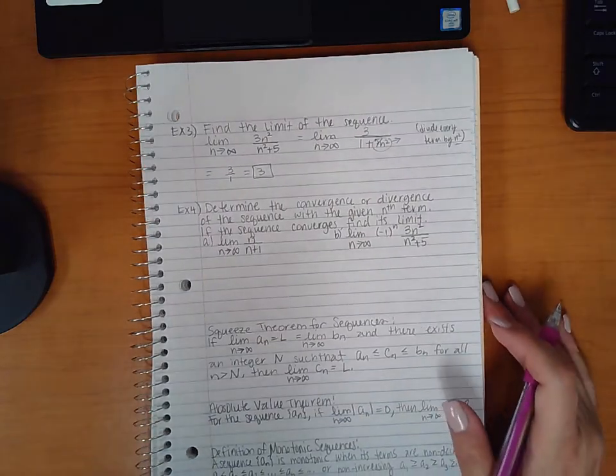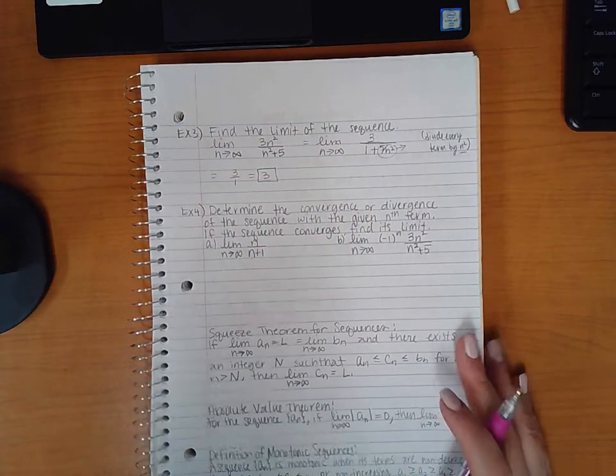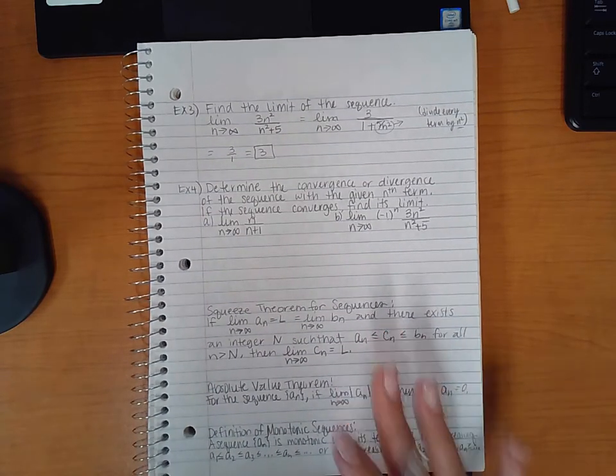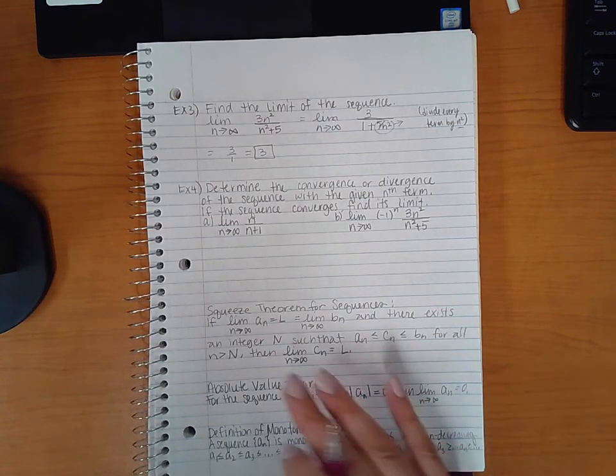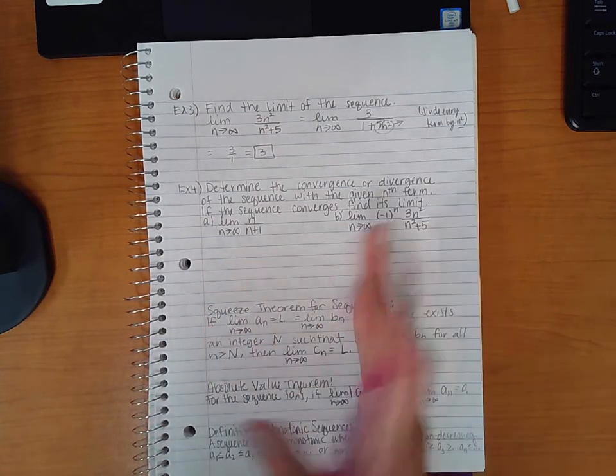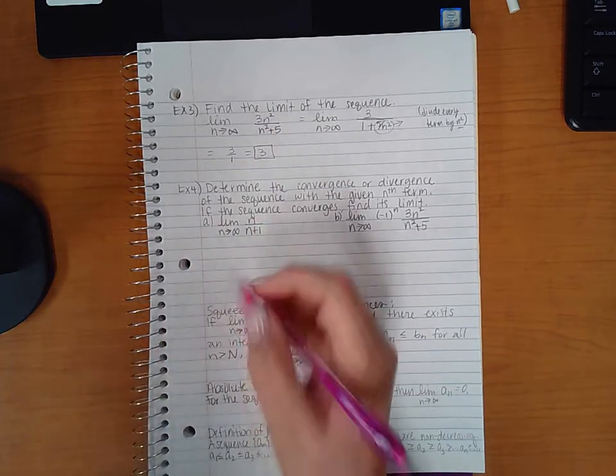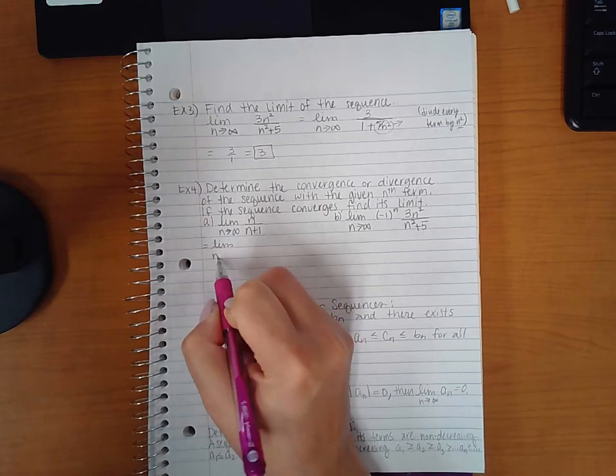Now example four says determine the convergence or divergence of the sequence and then find its limit if it converges. If it doesn't converge it's because the limit doesn't exist, right, so you can't find it. So the limit as n over n plus one, I'm going to do the same technique as I did before but this time I'm dividing by n.